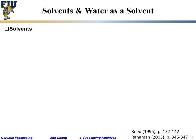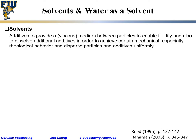Let's first talk about solvents. Solvents are additives that give you flow capability between particles to enable fluidity, and they dissolve additional additives — your binder, your dispersant — to achieve certain mechanical and rheological behavior. Viscosity and rheological behavior determine how fast you want your slurry to flow, how fast you want your paste to change shape and disperse particles and additives uniformly.